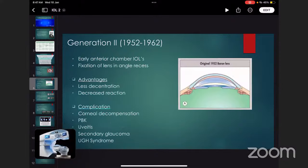This was further improvised to generation 2, in which IOL is placed in the anterior chamber with fixation of lens in the angle recess. Advantages were less decentration and decreased reaction. Complications mainly caused corneal problems such as corneal decompensation, pseudophakic bullous keratopathy, uveitis, secondary glaucoma, and UGH syndrome.